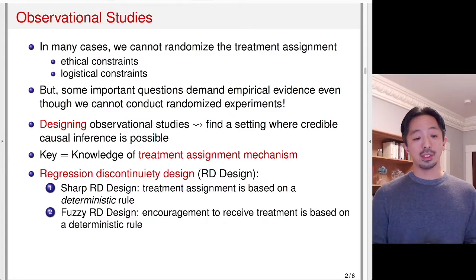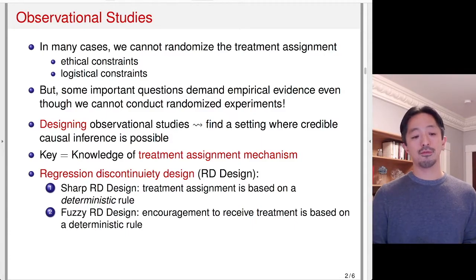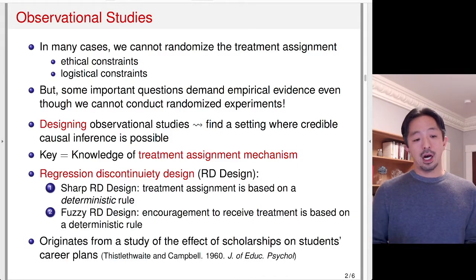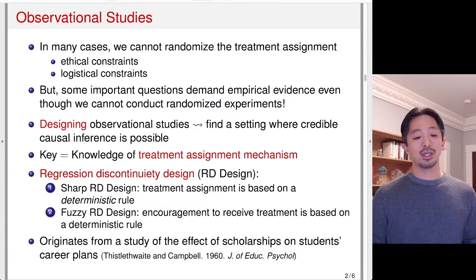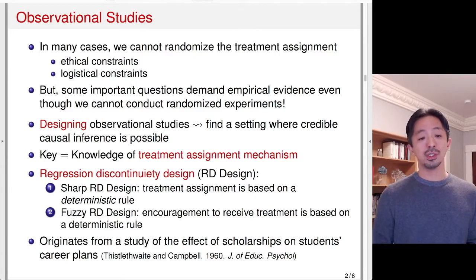We're also going to study in this module the fuzzy RD design, where the encouragement to receive treatment is based on the deterministic rule, as opposed to the treatment assignment itself. You can already probably see that we may use some instrumental variable techniques here to analyze such a design. This RD design originates from a study of the effect of scholarships on students' career plans going back to the 1960s in educational studies, and has recently become very popular in social sciences.